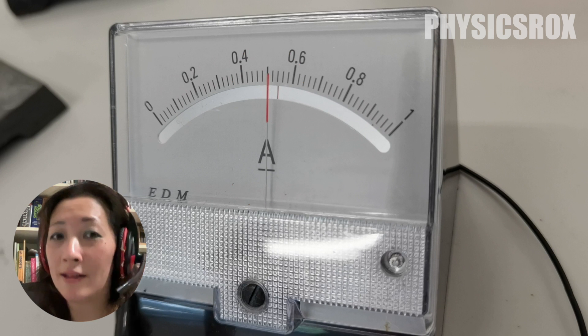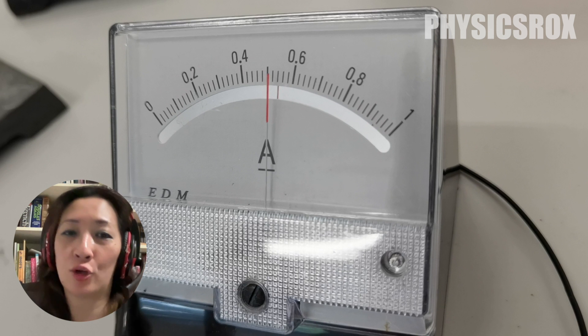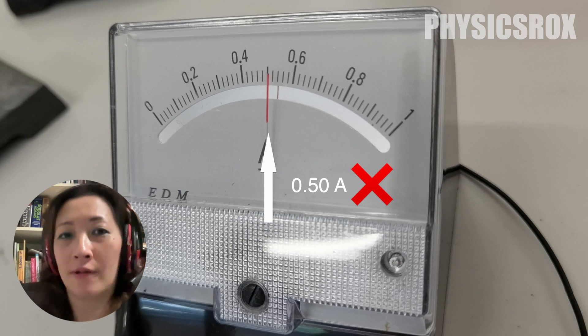At this angle, you can see that the needle is now showing us a value that's lower than its actual. We're reading the value now as 0.50 amperes.